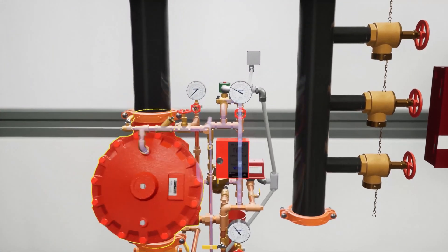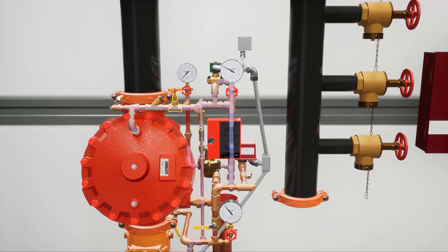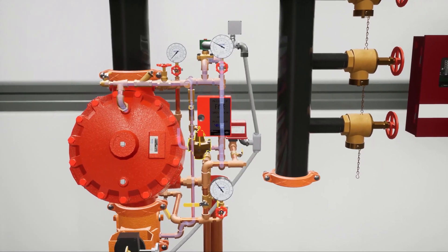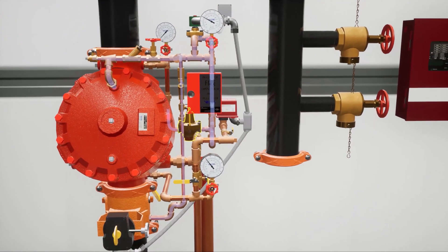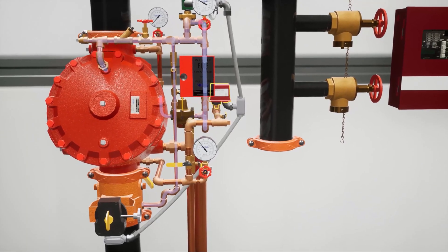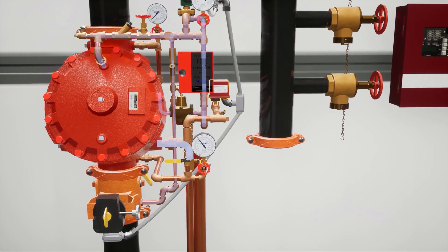The priming water exiting the priming chamber passes through the adjusted speed control valve to the inlet of the C2 pressure regulating valve. The water flow alarm is activated.